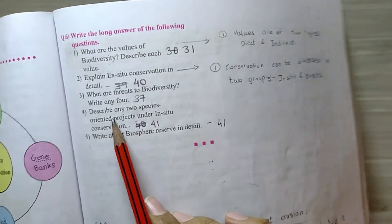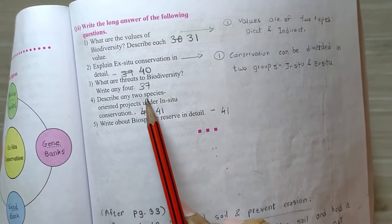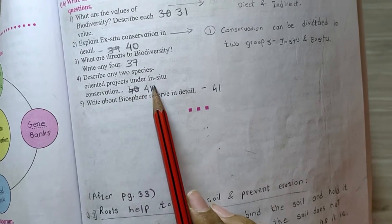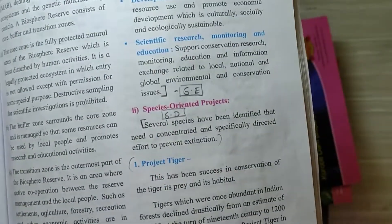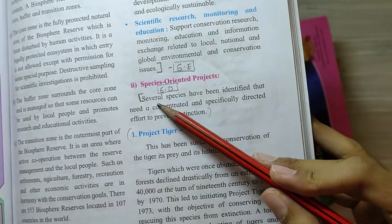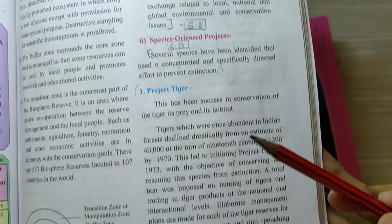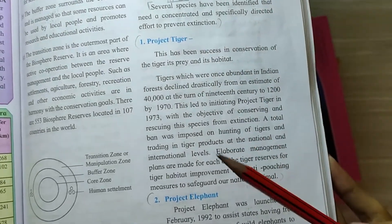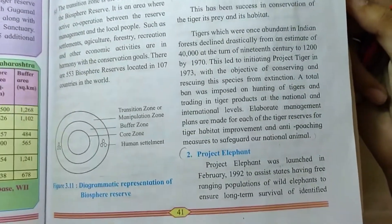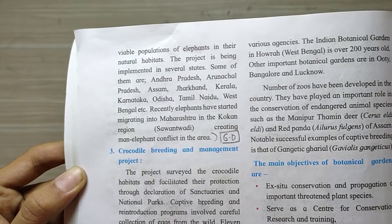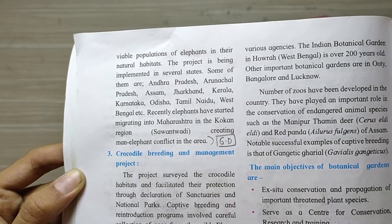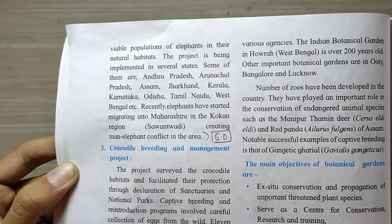Question number four, describe any two species oriented projects under in situ conservation. It is on page number 41. So you have to write this point from several species to project tiger, project elephant, and on next page till conflict in the area. These are the two points.